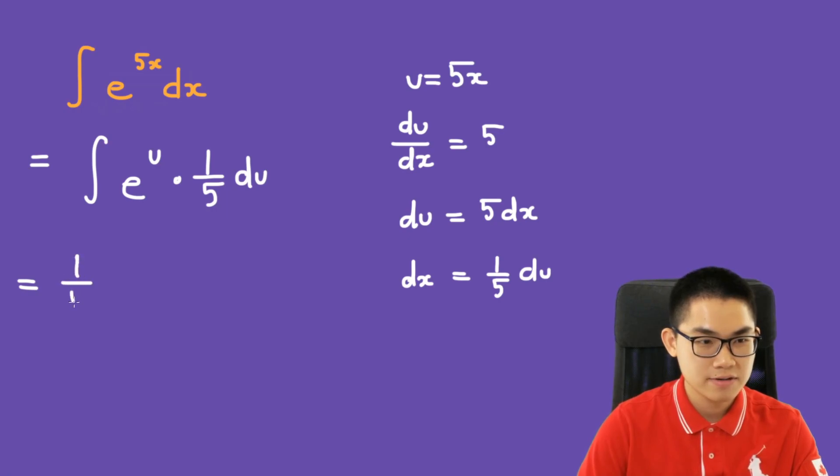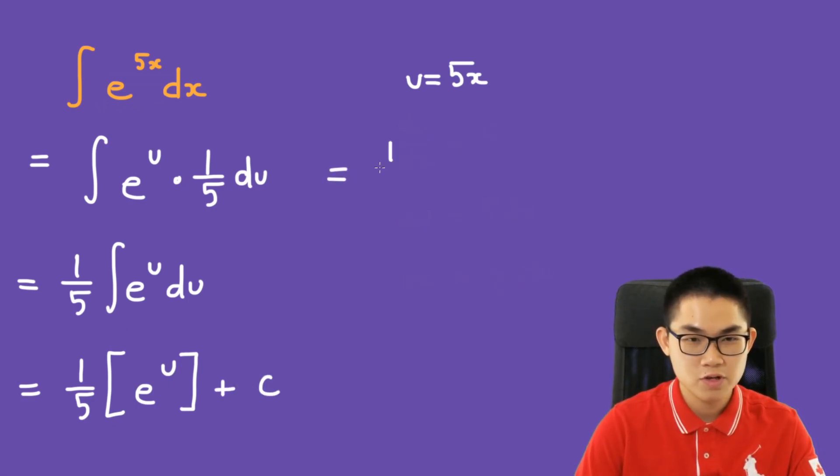We bring the constant out. Then the antiderivative of e to the power of u is itself. And the last step is to put u back. So we get 1 over 5 times e to the power of 5x plus c.